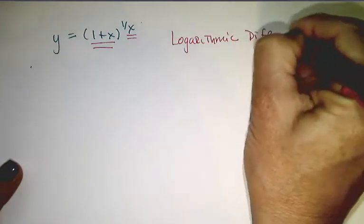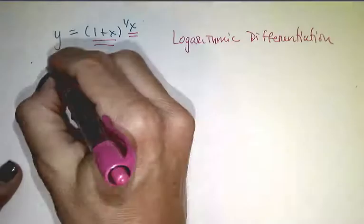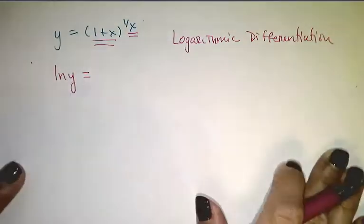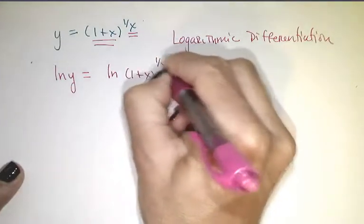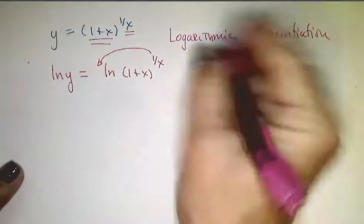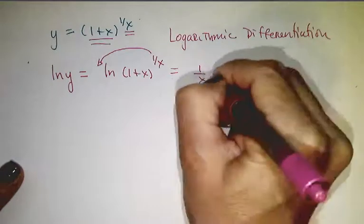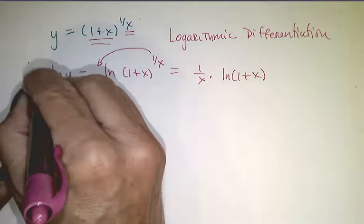Like we've been doing this entire video, I'm going to take the natural log of both sides, which equals the natural log of (1+x) to the 1 over x. I'm going to bring that power down, so it's 1 over x times the natural log of (1+x). That's step 1.